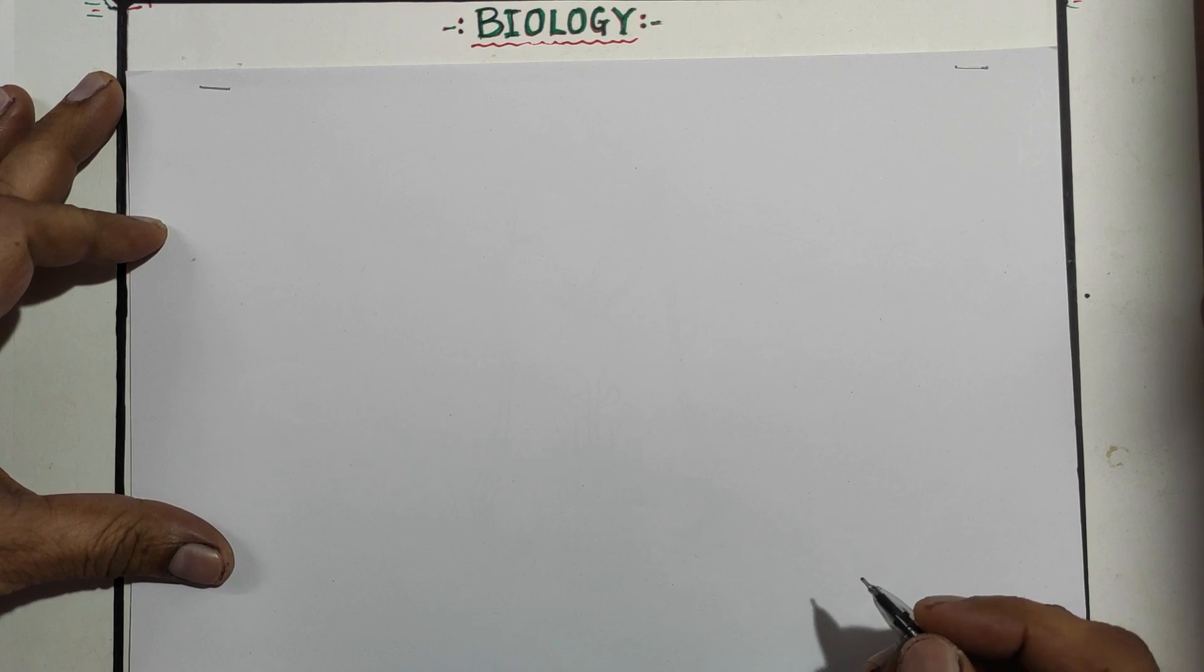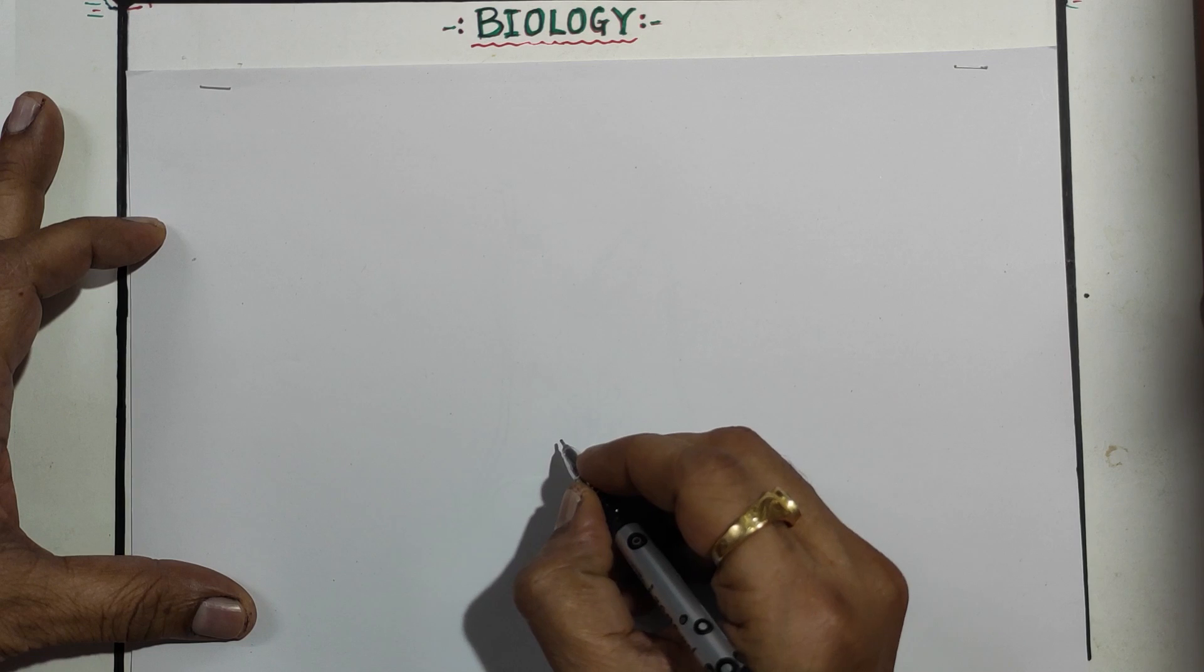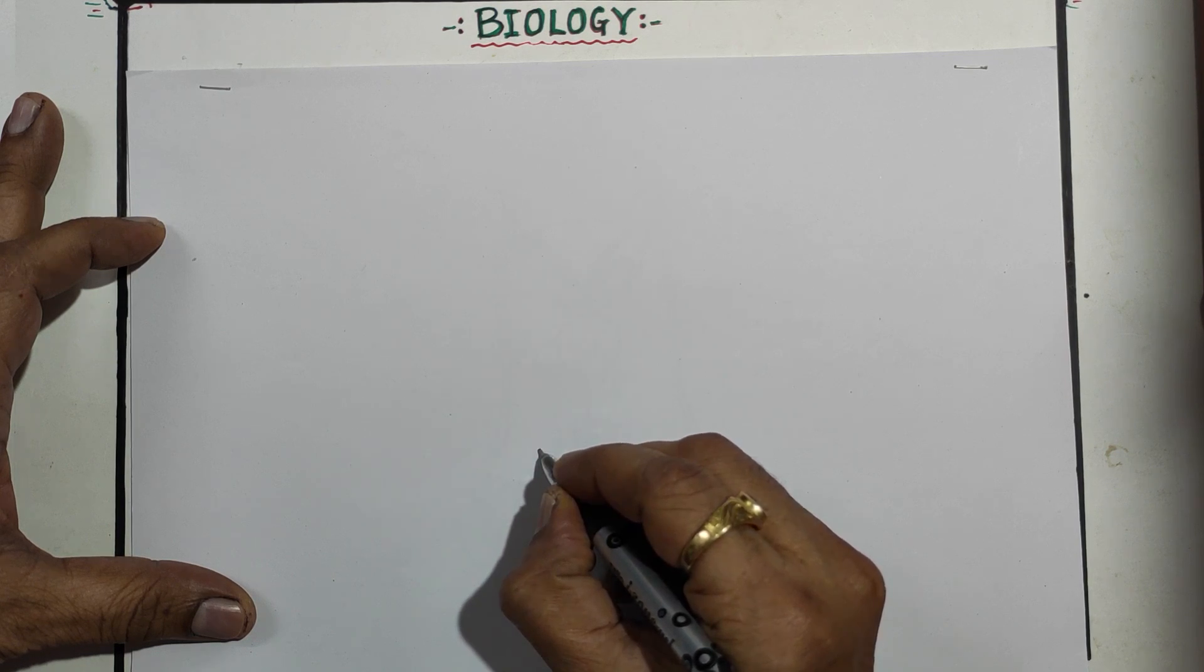Welcome dear student to my channel. We'll see today about the L.S. of human brain. Okay, so first we'll start with the brainstem. So here you draw the structure somewhat like the parrot.